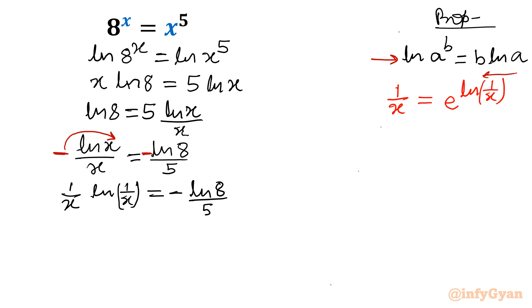e raised to the power ln a equal to a. So if I will write here e raised to the power ln 1 over x, ln 1 over x equal to minus ln 8 over 5. Now let us substitute y equal to ln 1 by x. This is I am going to put y. So this equation will convert. y into e raised to the power y equal to minus ln 8 over 5.